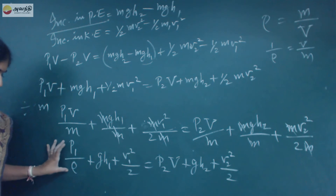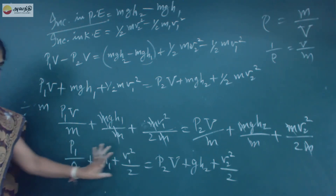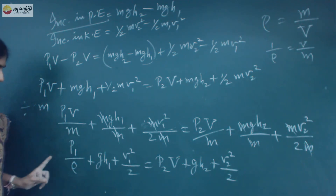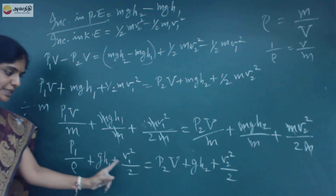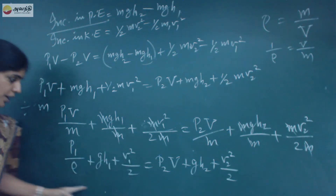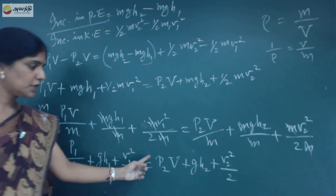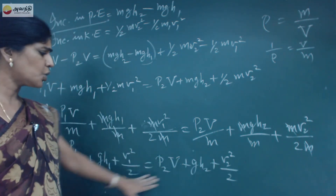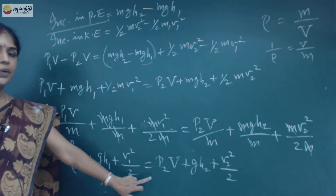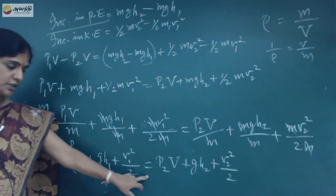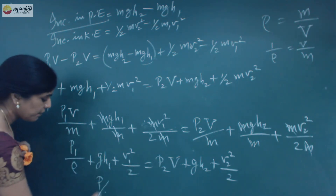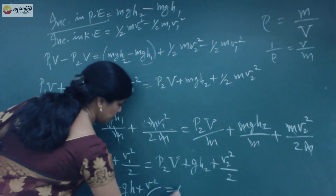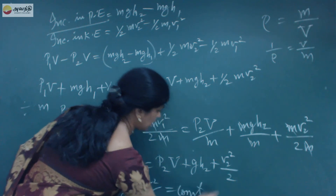This is nothing but pressure energy plus potential energy plus kinetic energy. The total energy of the liquid — the sum of pressure energy, potential energy, and kinetic energy — for water entering the tube equals that for water leaving the tube. So we can write: P by rho plus gH plus V squared by 2 equals constant.